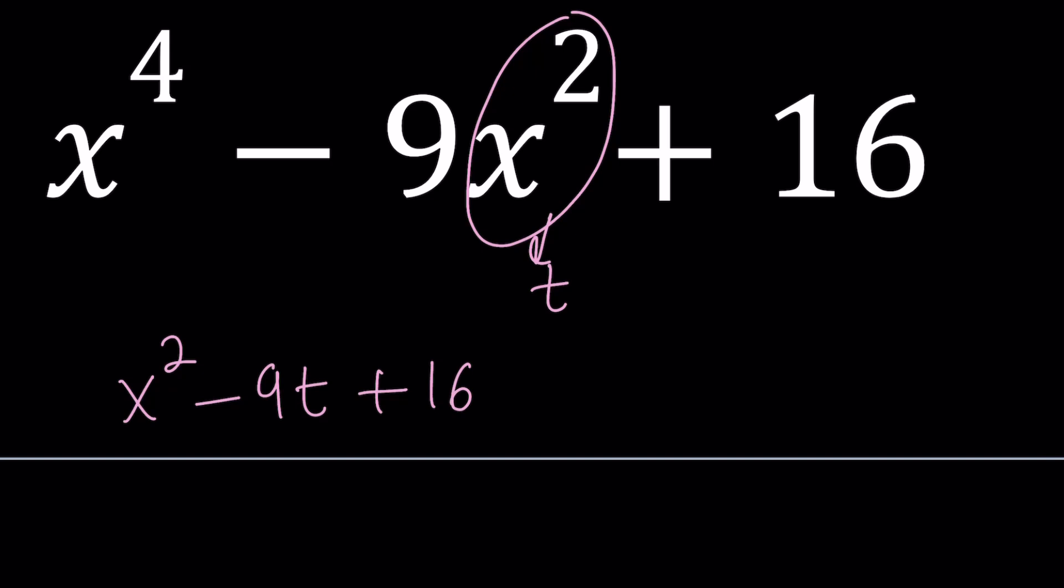Now, in order to be able to factor this, we can do a couple different things. We can solve this as a quadratic equation because the roots are going to give us the factors, factor theorem, right? For example, if t minus a is a factor, then t equals a is a root, and vice versa. Make sense?